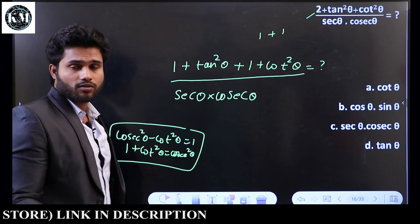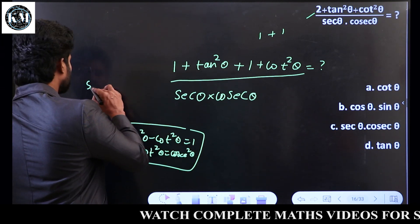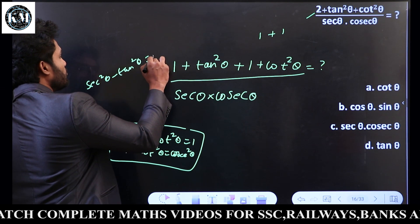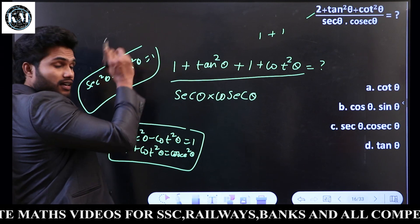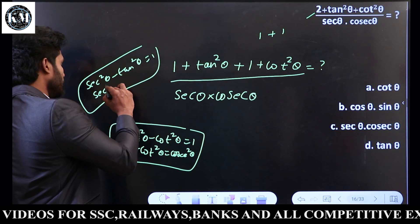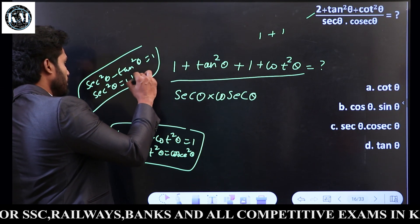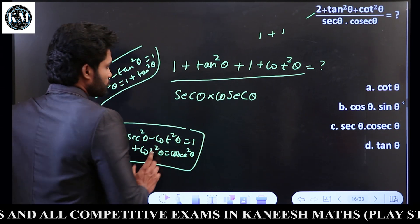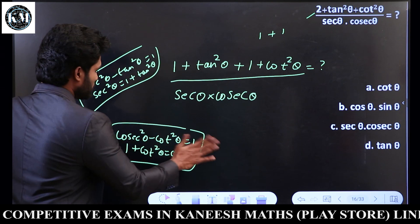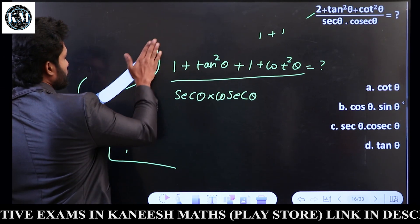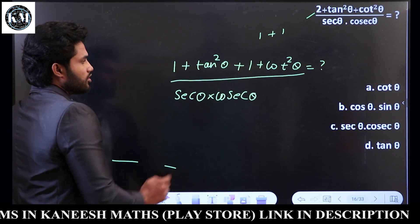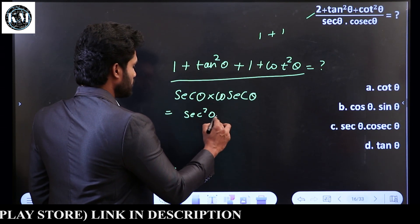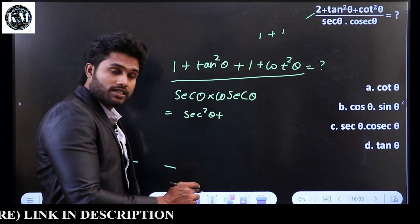Recalling the formula: secant square theta minus tan square theta is equal to 1, so secant square theta is equal to 1 plus tan square theta. These are the two important formulas to remember. Now, are you ready? I will focus on sec square theta divided by sec square theta.